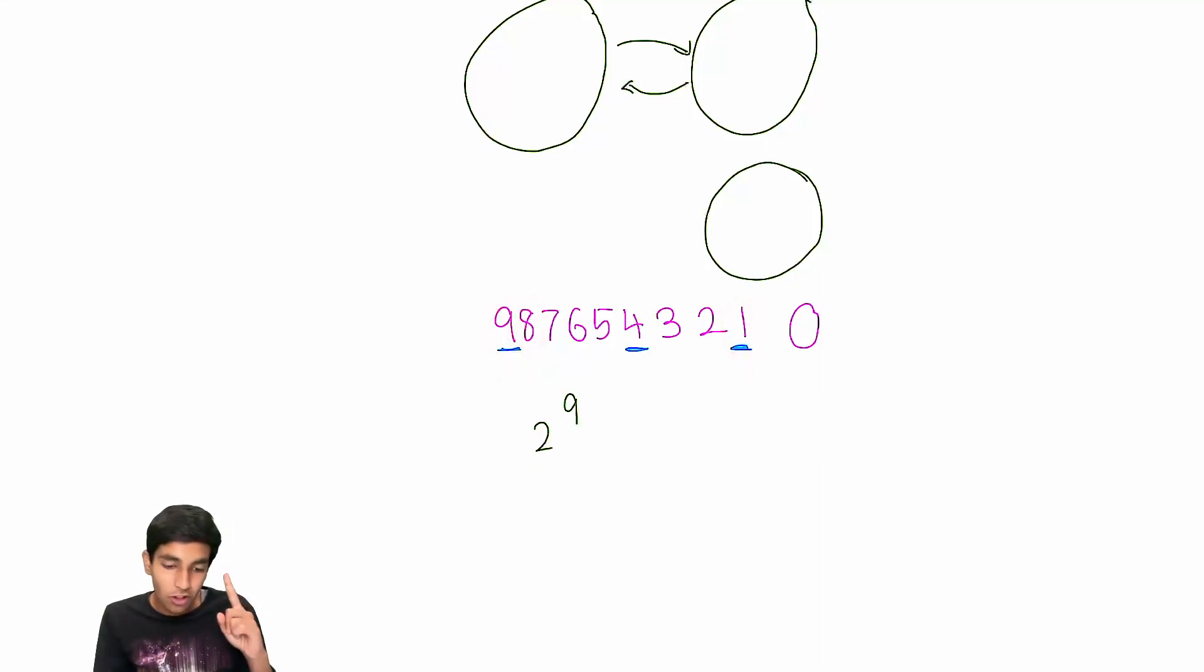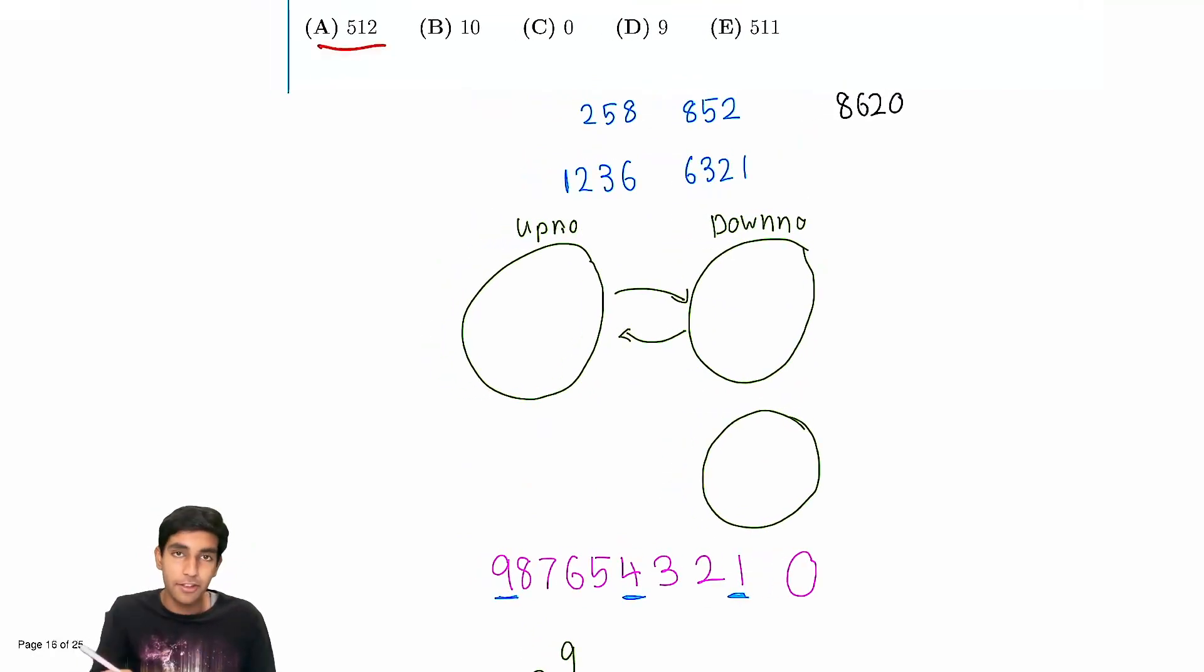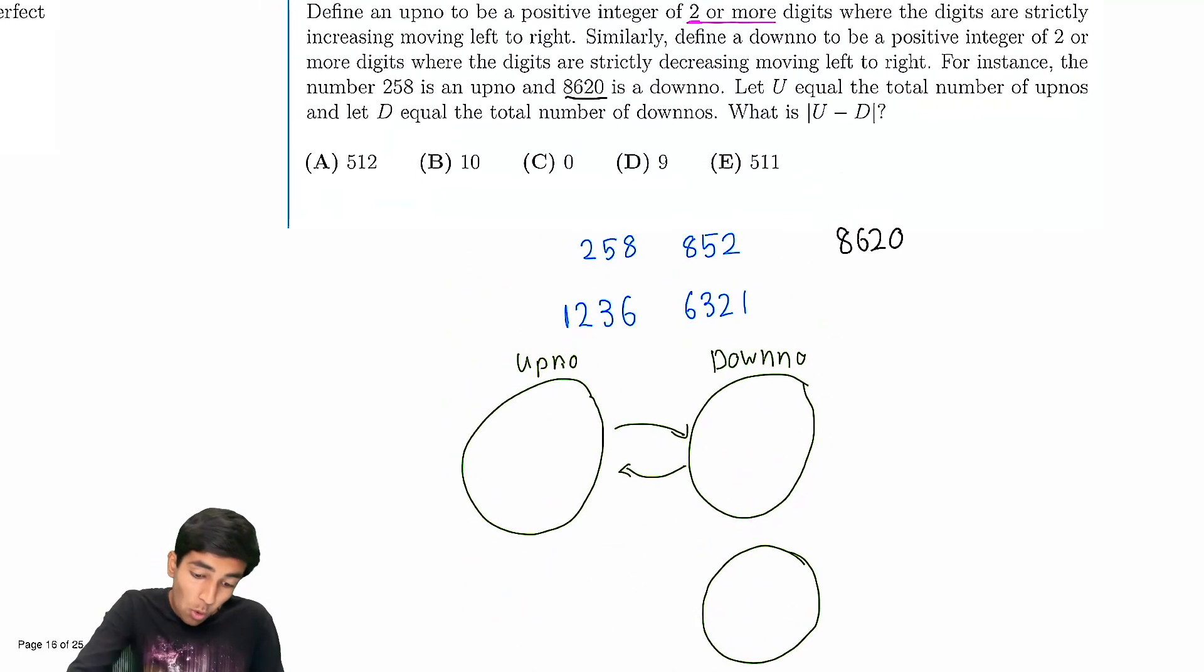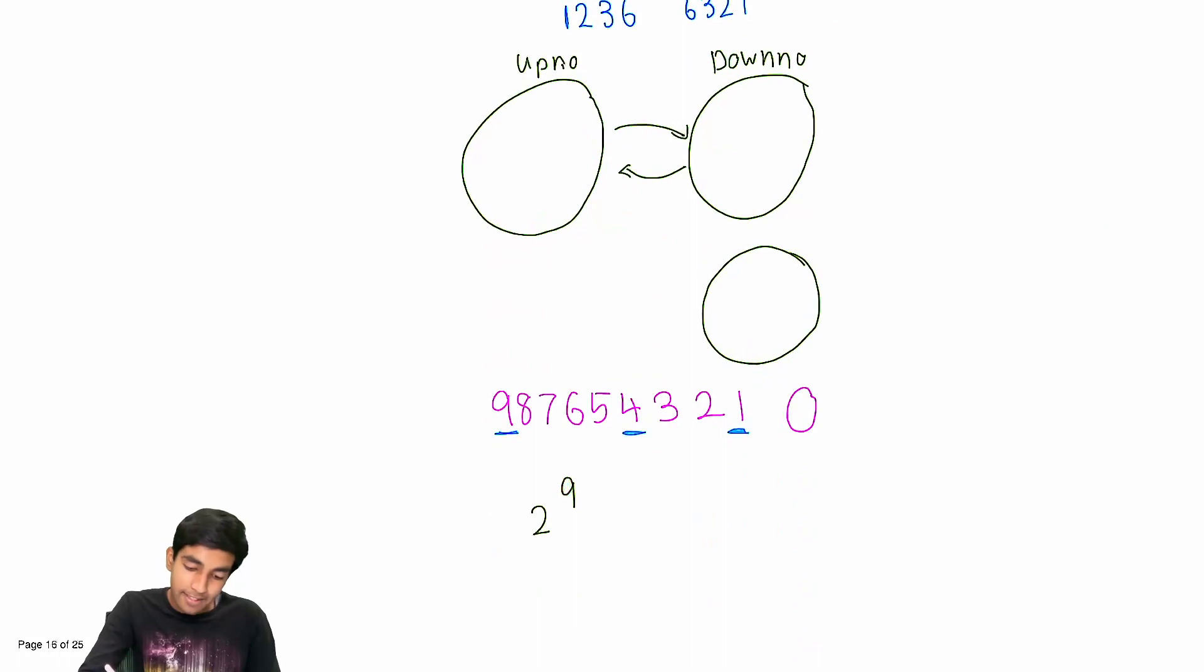But be careful, they even have a trap answer for you here. Two or more digits. And 0 itself, without any other digits in front, is not a downno. So we have to have at least one other digit. We're overcounting the possibility, but we select none of these and we just have 0. So we subtract 1.